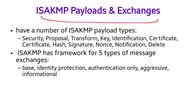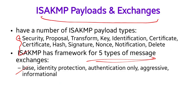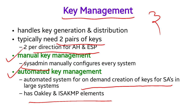ISAKMP has a number of payload types, including: security, proposal, transform, key, identification, certificate, hash, signature, nonce, notification, and delete. The exchange types include: identity protection, authentication only, aggressive, and informational. For example, the security association payload type has parameters including DOI (Domain of Interpretation) and situation. The hash payload contains data generated by the hash function. These are the key management features: OAKLEY for automated key exchange, and ISAKMP for framework with header types and payload data.